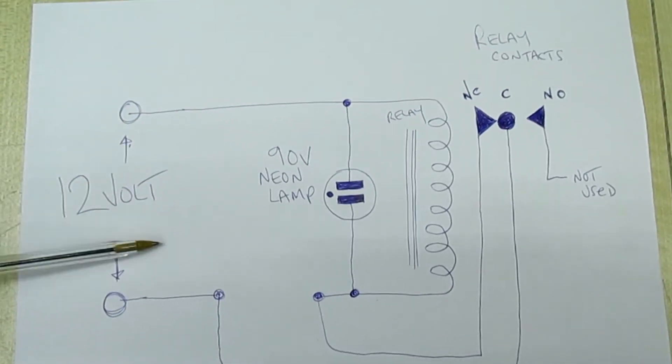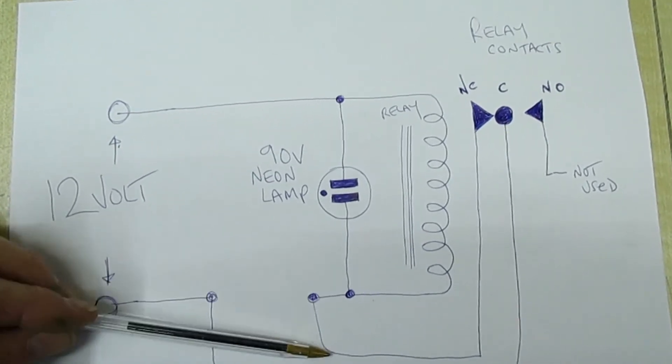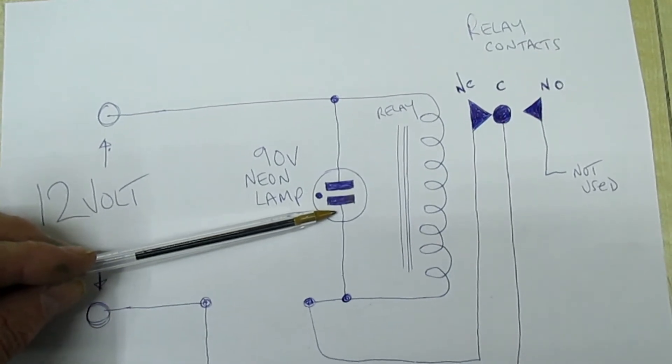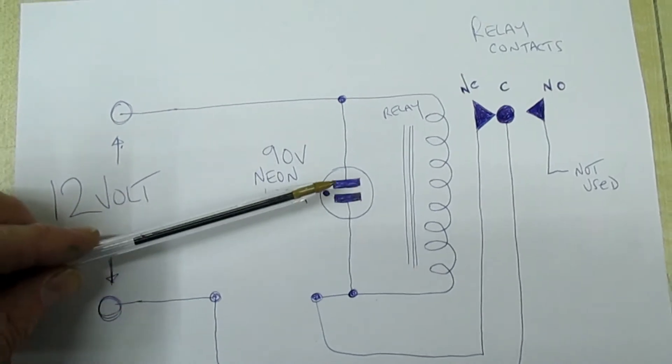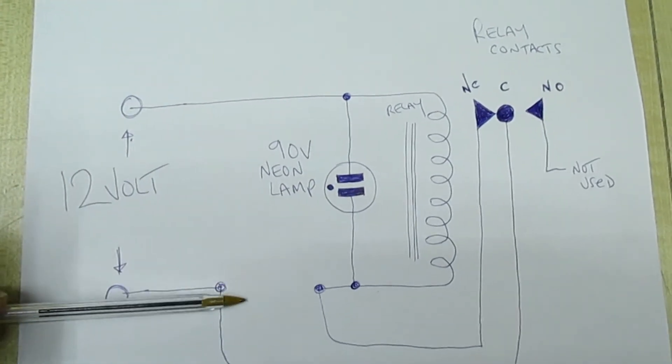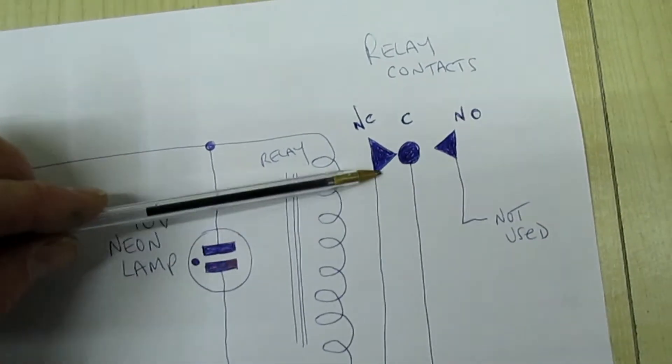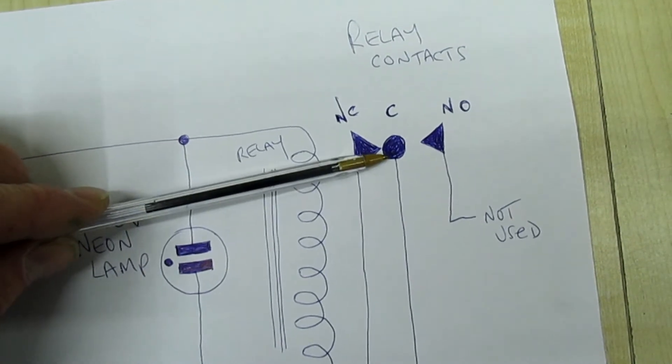Now what most people do is just apply 12 volts to it, and when you take the power off the back EMF is formed and the neon lamp will flash. So you'd have to keep applying the power and taking it off to make the neon lamp flash. So what I've done is I've broke the circuit there and I've connected the two wires of the circuit to the normally closed contact on the relay and the middle one, the common.